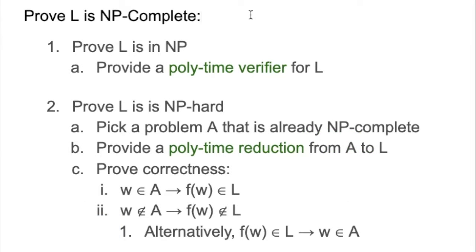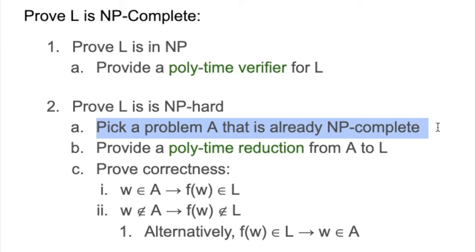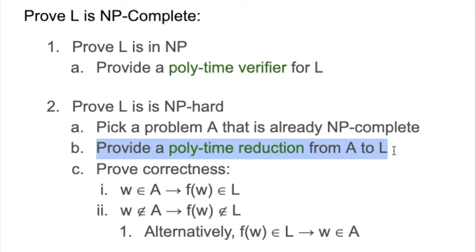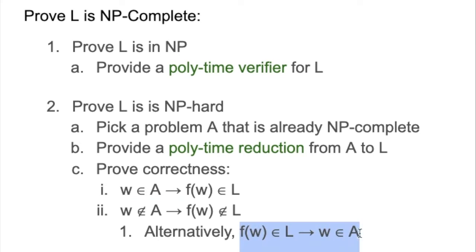Again, the reason we care about proving problems are NP-complete is because if someone proves any NP-complete problem is actually in P, then you can collapse the whole class of NP into P. To prove NP-completeness, you must satisfy both parts: first, show it's in NP by providing a polytime verifier; second, prove it's NP-hard by picking an already NP-complete problem and providing a polytime reduction to your new problem. Along with the time complexity analysis, you also have to prove correctness using in-to-in and out-to-out cases. For the out-to-out case, you could alternatively do the reverse in-to-in case, which is just the contrapositive.